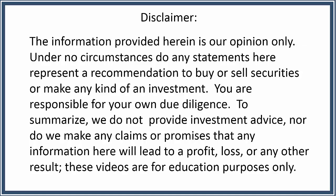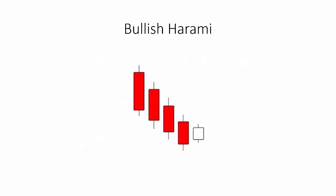The bullish harami is a two-bar candlestick pattern that develops after a downtrend. Each of the two candlesticks has an opposite color. So after a sell-off in price, this pattern is formed when the real body of the second candlestick trades completely within the range of the real body of the previous candlestick.